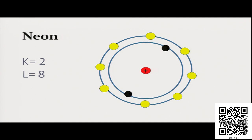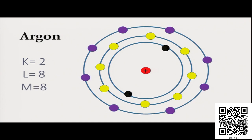Similarly, in case of argon, there are 18 electrons distributed as: K shell two electrons, L shell eight electrons and M shell again eight electrons. Here also in the M shell, as it contains eight electrons, we say it has a complete octet and because of which argon also shows very less chemical reactivity.